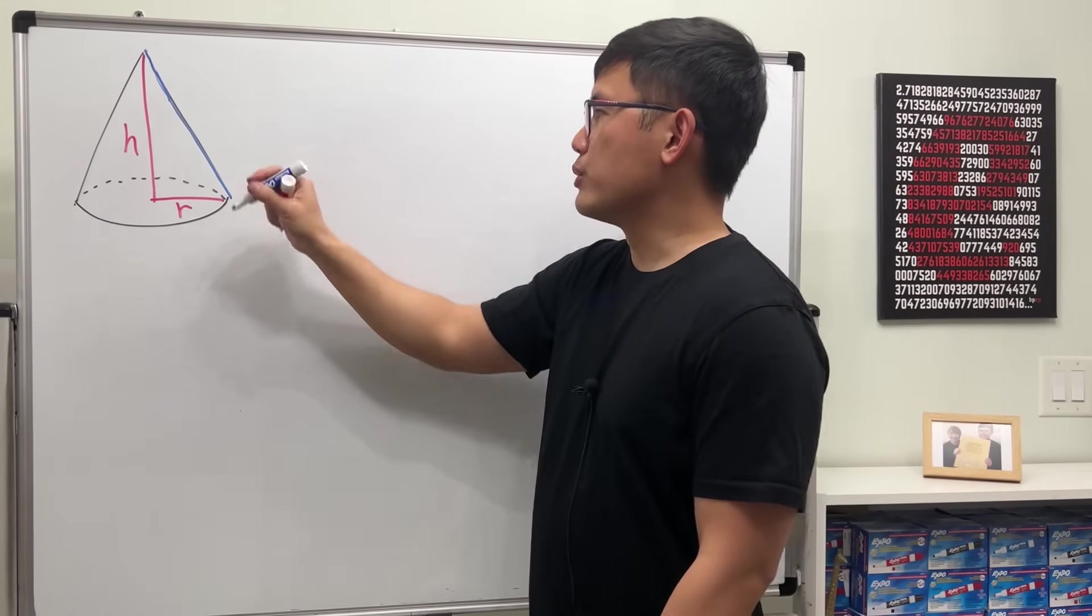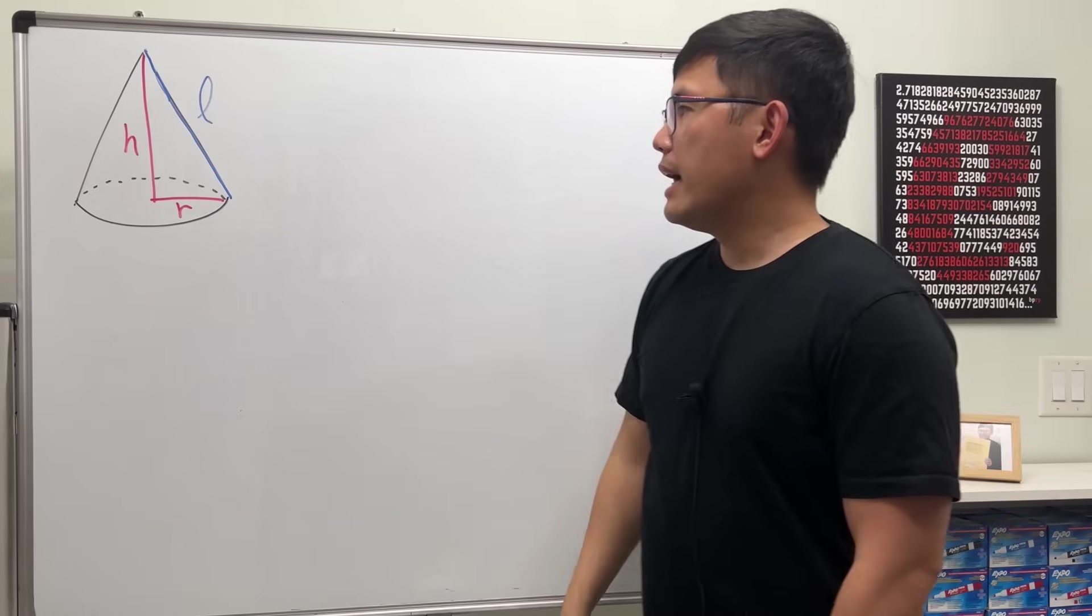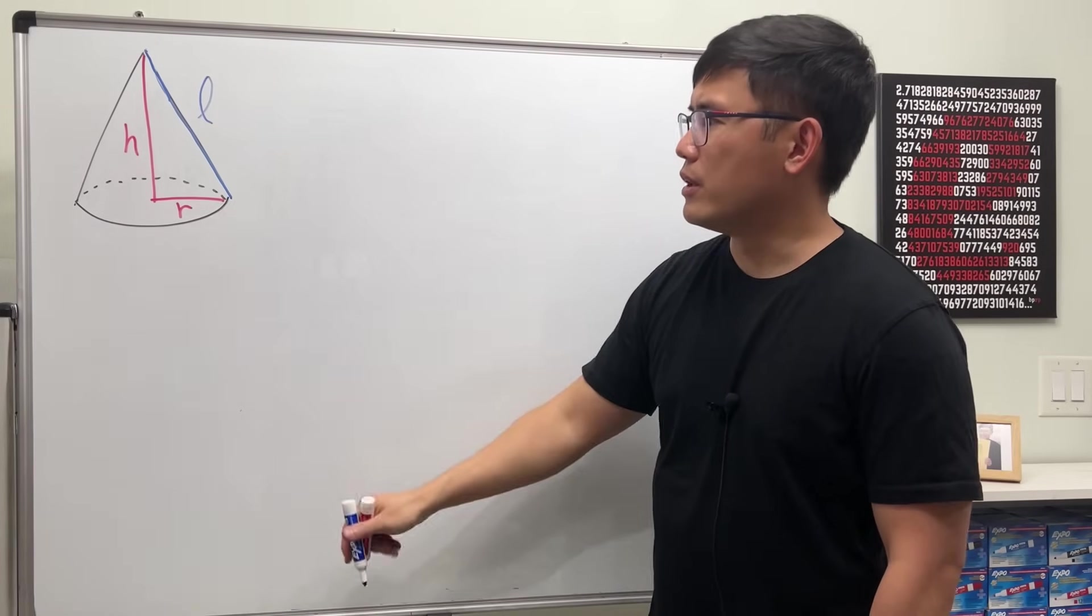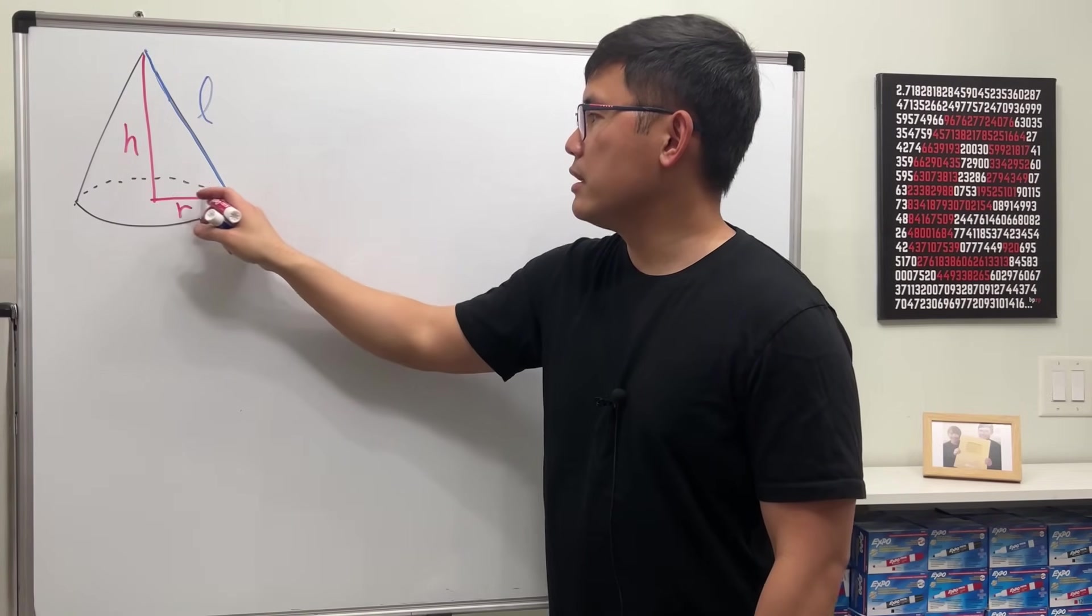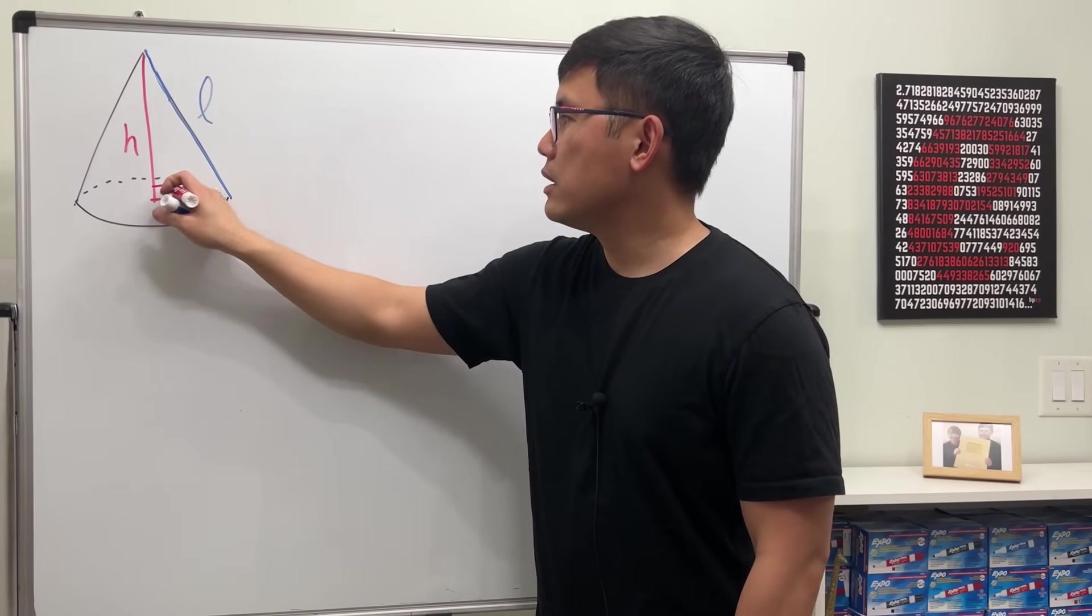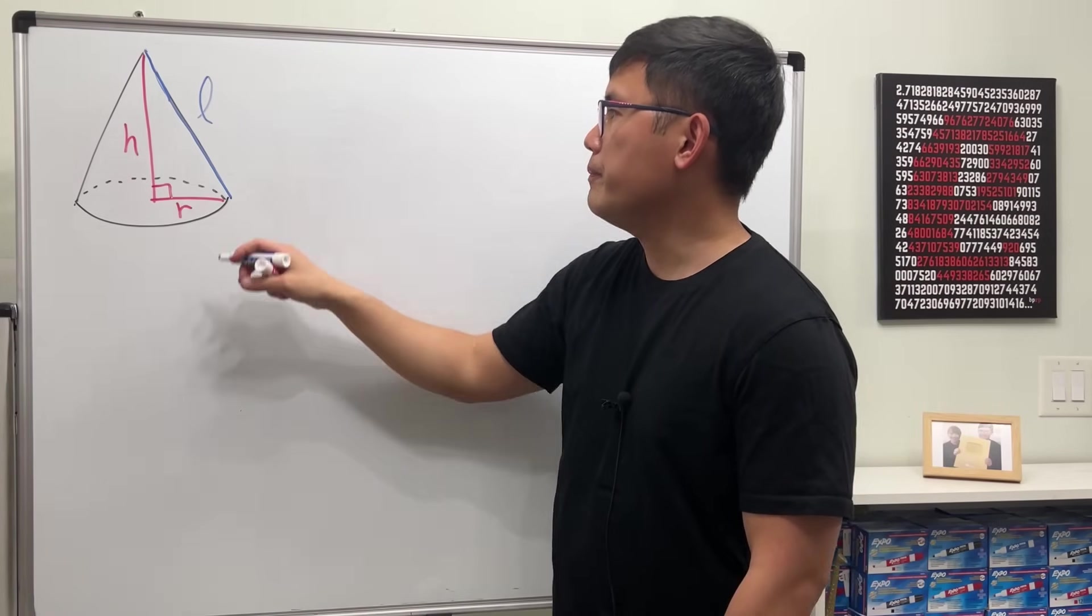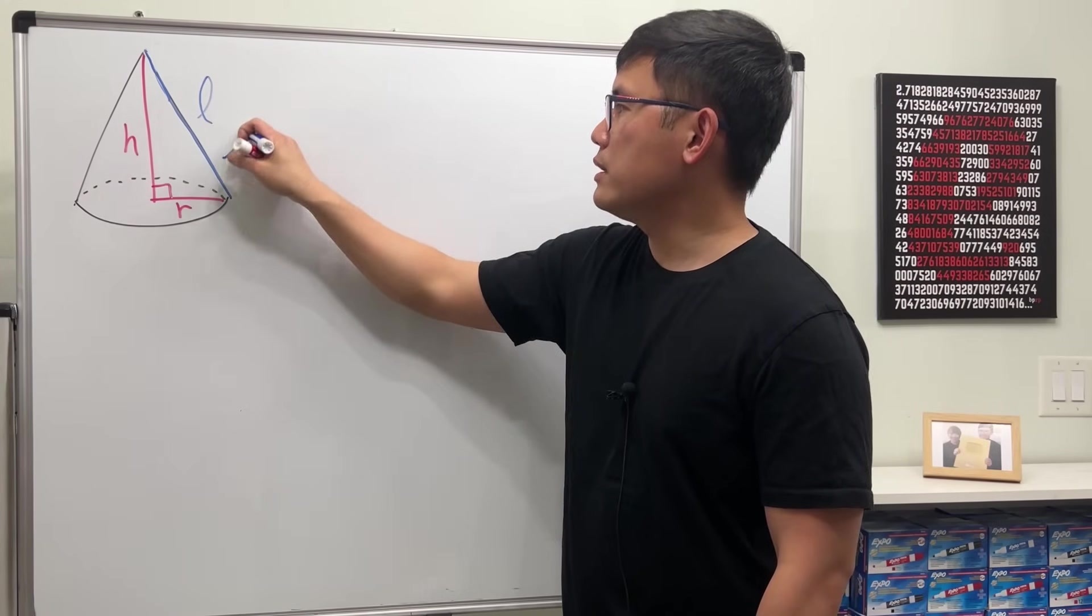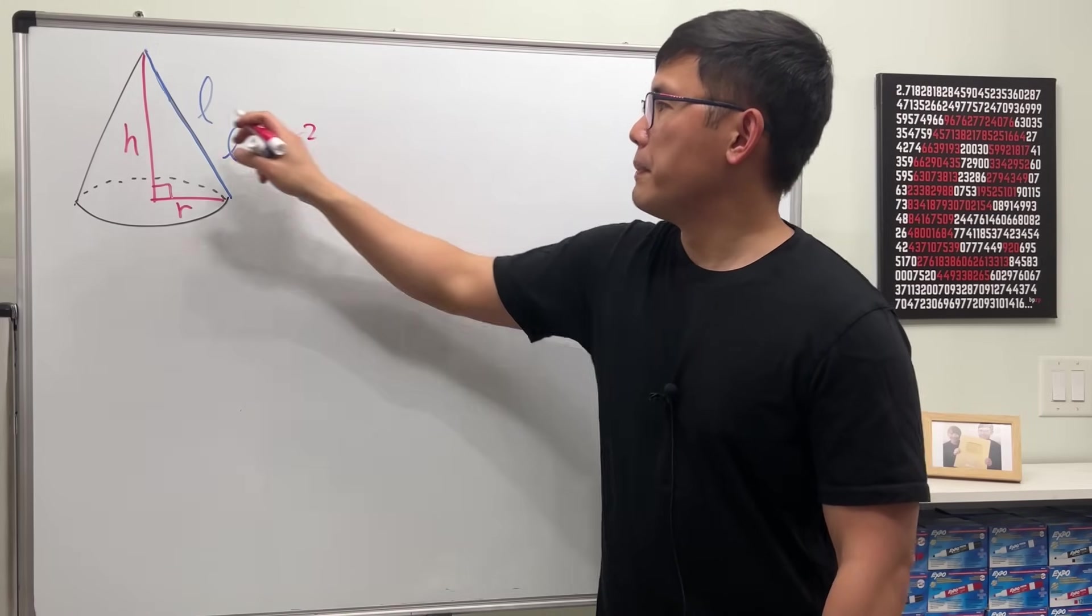So this right here is crucial. I'm going to call the slanted height L. And we can get a formula for that right here because we know that the height H is perpendicular to the radius R, so we can use the Pythagorean theorem. We see a right triangle here.